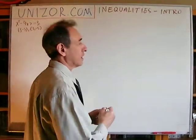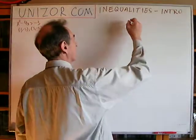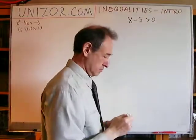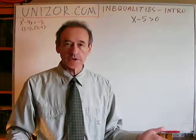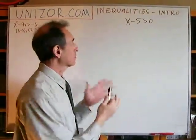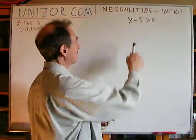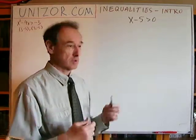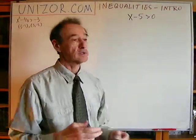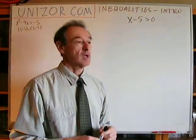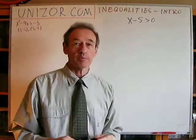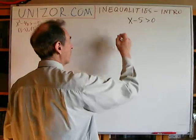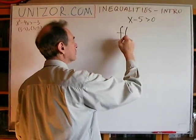Let me start with something relatively simple: x minus 5 greater than 0. This is an inequality. Let's consider what we have written here. On the left we have a certain function, the argument is x. On the right we have a certain constant. Basically, when we are talking about inequality, we are talking about some condition which we usually put on some function.